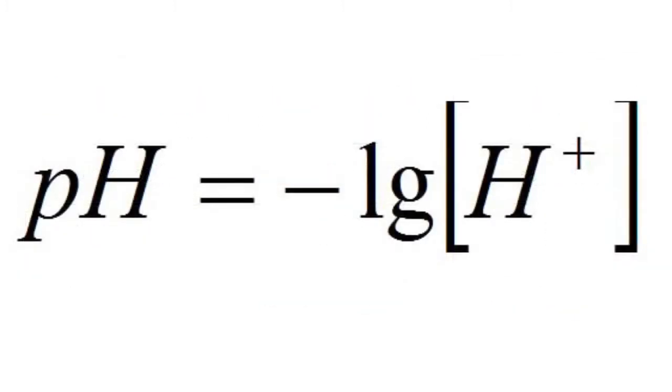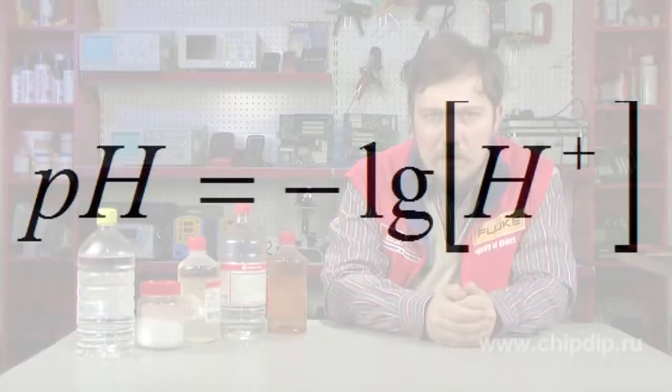To avoid the inconvenience of using negative exponents, scientists developed a new indicator — a pH value — which is in essence the decimal logarithm of hydrogen cation concentration with the opposite sign. Now it is really easy to remember: pH in neutral solutions is equal to 7, in acid solutions less than 7, and in alkaline solutions over 7.